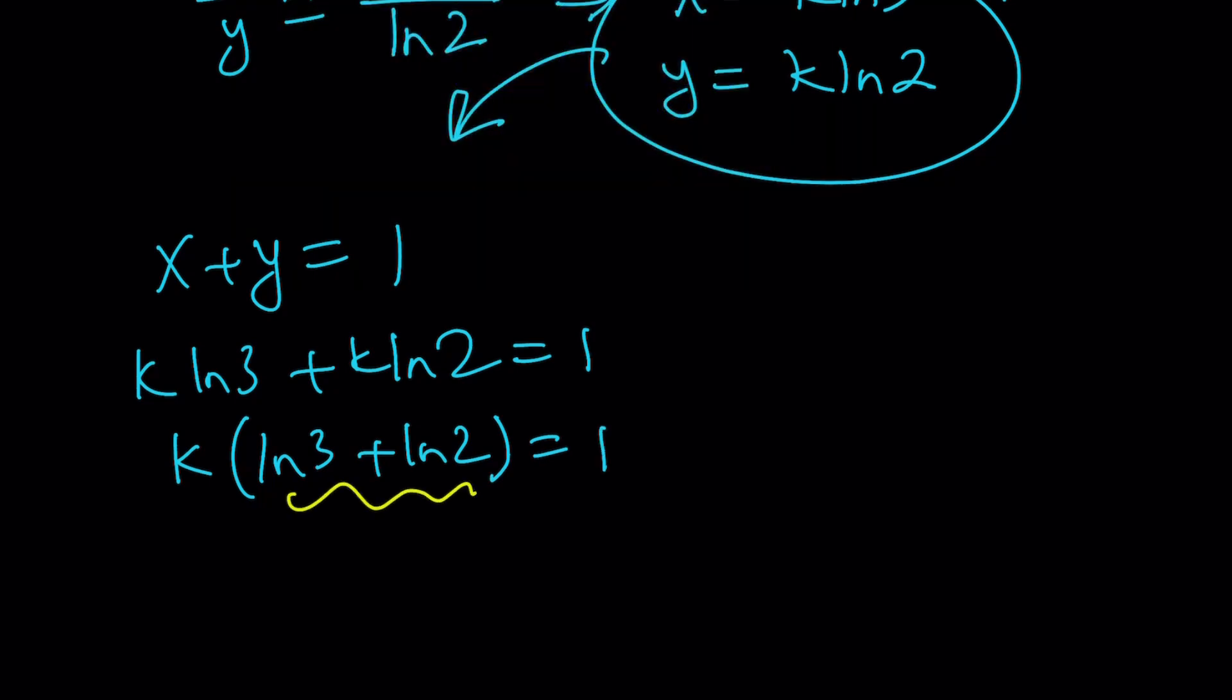But this is ln a plus ln b, which is the product property. That gives you ln 3 times 2, so that's just ln 6. So from here, we find the k value, which is 1 over ln 6.